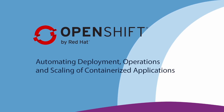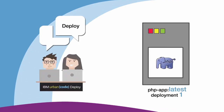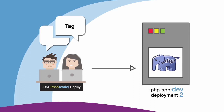To demonstrate the use cases of the OpenShift plugin, I'm going to deploy a PHP application on an OpenShift server, scale it, tag it, then perform a rollback. This demonstrates the typical lifecycle of an OpenShift application.